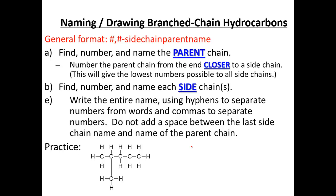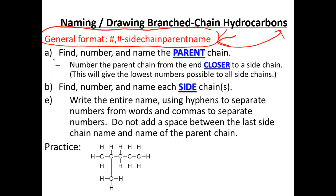Our general format for naming these includes: a number or numbers separated by commas, then a dash, then the sidechain name, then the parent chain name — all together as one word with no spaces. We're going to find the number and name of the parent chain as our starting point, numbering from the end closer to the first sidechain to give us the lowest possible sidechain numbers. We write the number using hyphens to separate numbers and words, and commas to separate numbers.